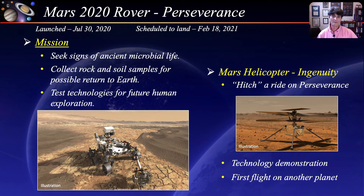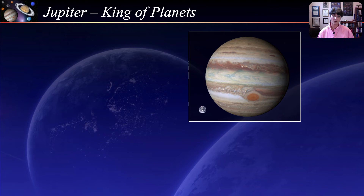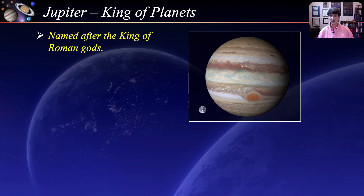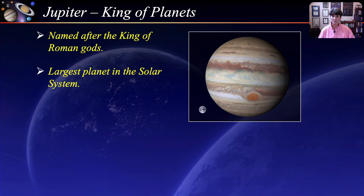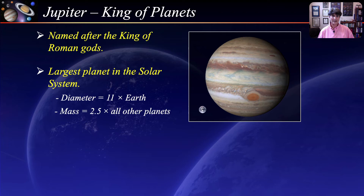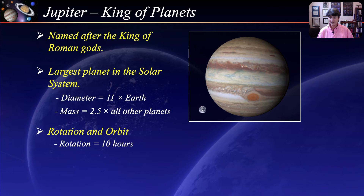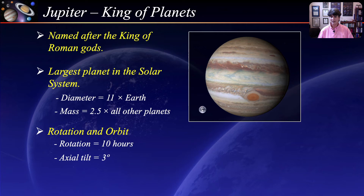We now move to the Jovian planets, the first of which is Jupiter. Being the biggest planet, Jupiter is named after the king of the ancient Roman gods and dominates the other planets. Jupiter is the largest planet in the solar system — 11 times the diameter of Earth — and its mass is more than twice that of all the other planets combined. Despite its size, Jupiter has a very rapid rotation and has the shortest day of all the planets, taking only 10 hours to rotate about its axis. Its axial tilt is only 3 degrees, so it spins nearly upright and does not have pronounced seasons.